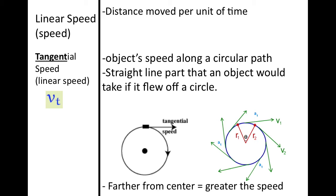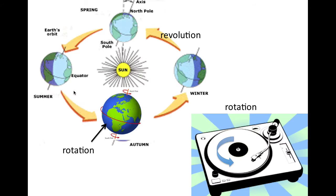Tangential speed is the straight-line part — the direction an object would take if it flew off a circle. An object going around a circle, if it were not held in, would fly off due to inertia. The Earth is actually traveling in a straight line — it thinks it is — but the Sun's gravity is pulling it so that it continuously changes direction, and this is what causes orbits.